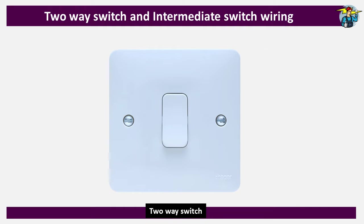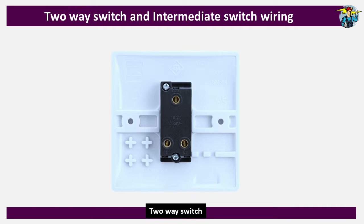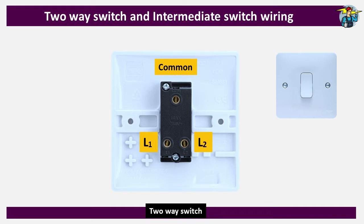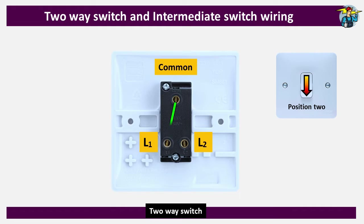When you look at the rear side of it, there are three terminals: the top one marked as Common, and the other two marked as L1 and L2. If you press the switch upwards, the Common terminal connects with L1. When you change the switch position to downwards, Common breaks its contact with L1 and connects with L2. These switches do not have an off position as in a single-gang switch — changing to upward or downward will make the Common terminal change its connection with L1 and L2 accordingly.